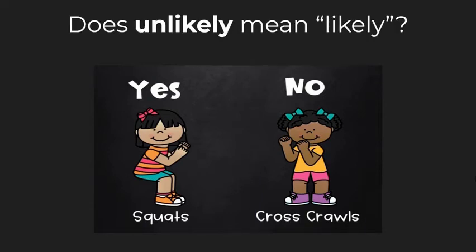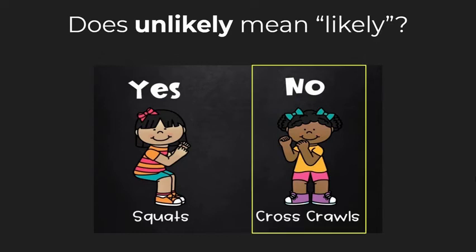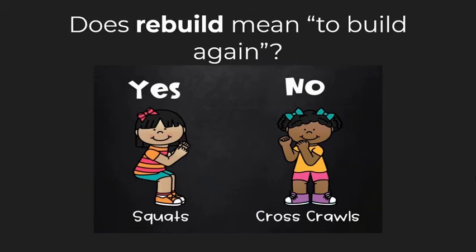Does unlikely mean likely? The answer is no — unlikely is the opposite of likely. Likely means something will probably happen, whereas unlikely means it will not happen. Remember, the prefix un means not. If you think yes, do squats; if you think no, do cross crawls.